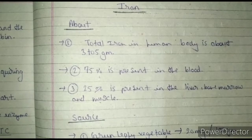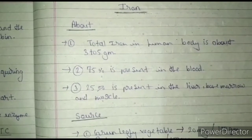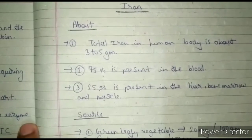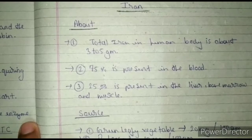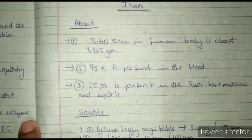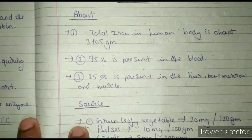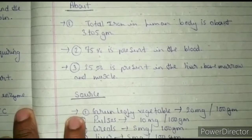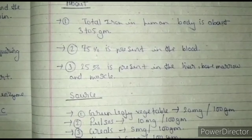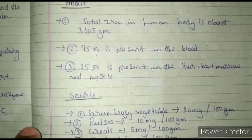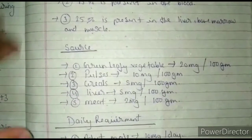Let's start with our first point, that is a general introduction about iron. In the human body there is three to five grams of iron present. Out of that, 75 percent of iron is present in the blood, and the remaining 25 percent of iron is present in the liver, bone marrow, and muscle.